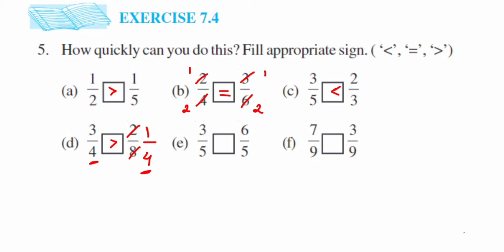Next, again it's a like fraction. We have 3 by 5 and 6 by 5. So in like fractions, compare the numerator. 6 is greater than 3, so 6 by 5 is greater. Next is also like fraction, we have 9 in the denominator. Compare the numerators. In numerator, 7 is greater than 3, so 7 by 9 is greater.